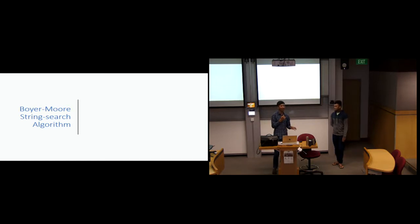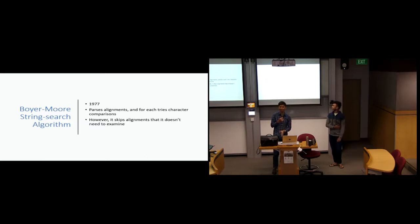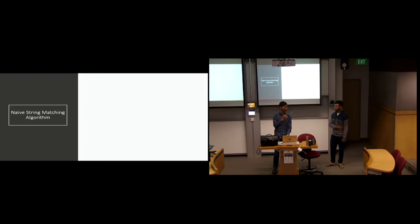Boyer-Moore string search algorithm is the main algorithm used to conduct this string search. Some background: created in 1977. What it does is it parses an algorithm. For each of the characters, it tries a character comparison. However, the advantage of it is that unlike naive character matching, it's able to skip alignments that it does not need to examine. Later, Abhideh will go into technical details, how it does that. It's actually commonly used in indexing and file search. If you are familiar with this icon here, this is the main algorithm used with regards to that. Now I'll pass my time to Abhideh who will explain naive string matching and how Boyer-Moore is used.